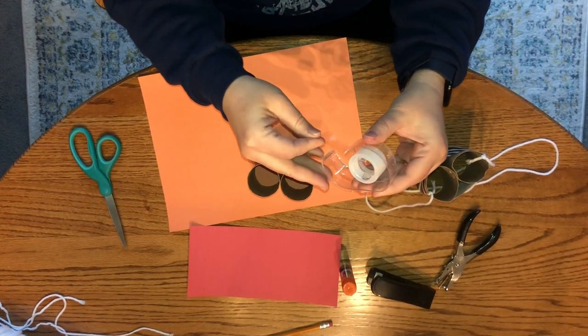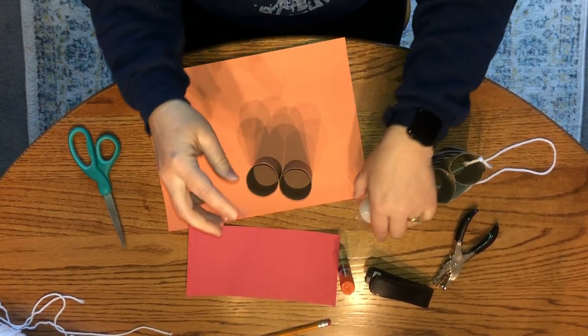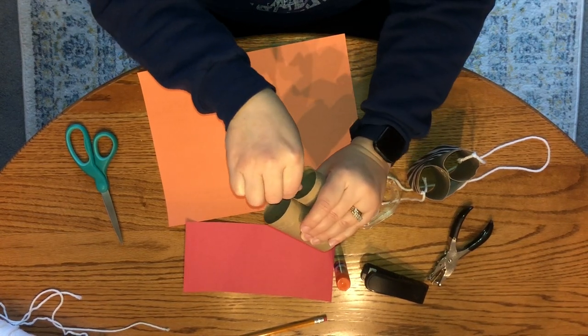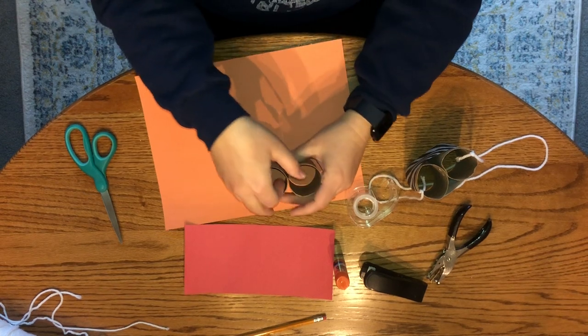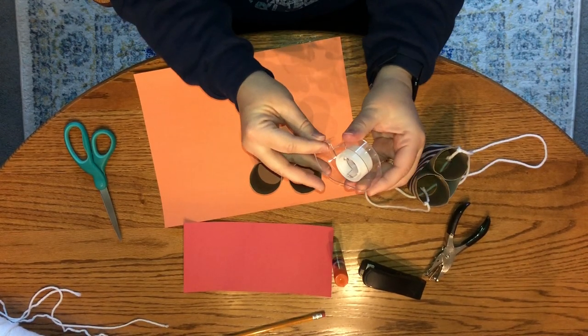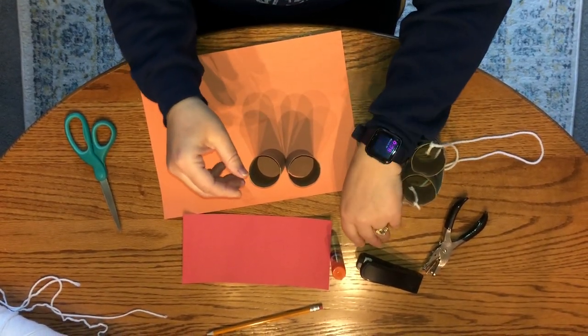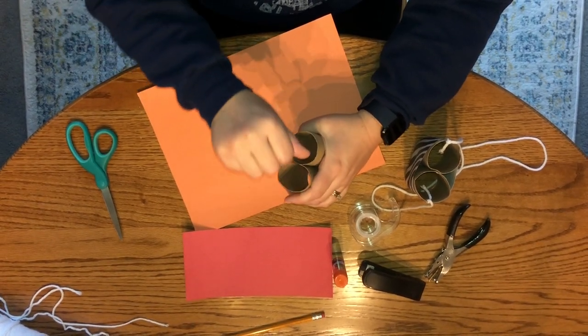You can tape them together right here in the center at the top, and then flip it over and tape them together in the center at the bottom. That will hold your tubes together.